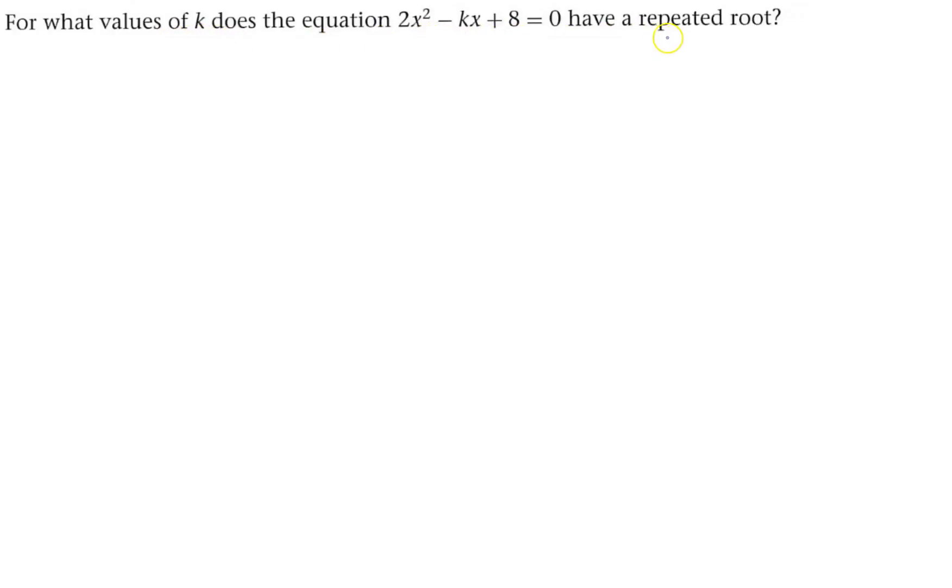What value of k does this equation have a repeated root? Repeated root - that means the discriminant must equal zero. And that is b squared minus 4ac must equal zero.